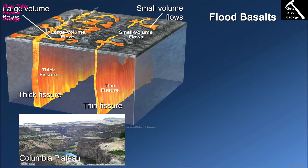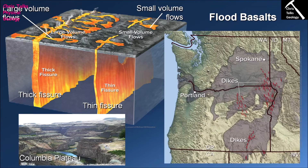The best example of a North American flood basalt is the Columbia Plateau, and this entire sequence consists of nothing but basalts — approximately 300 basaltic lava flows. You might think that some shield volcanoes also have around 300 lava flows, and you would be correct. But when it comes to flood basalts, it's all about scale.